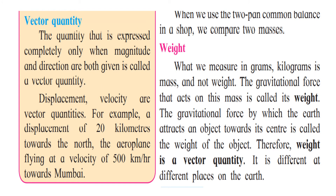Now there is another way of measuring, which is called the vector quantity. The quantity that is expressed completely only when both magnitude and direction are given is called a vector quantity. So there is not only magnitude but direction also — both together. If two things are assigned to a particular quantity, then that will be a vector quantity.